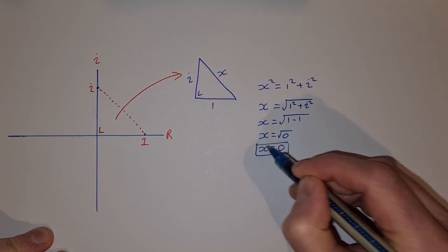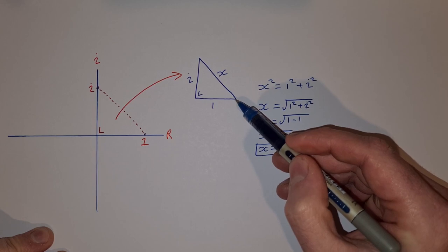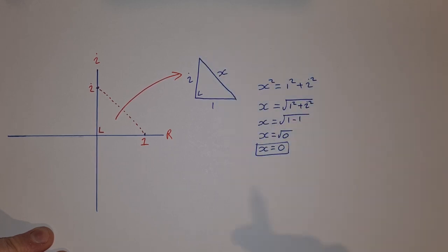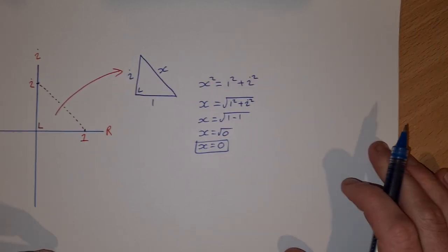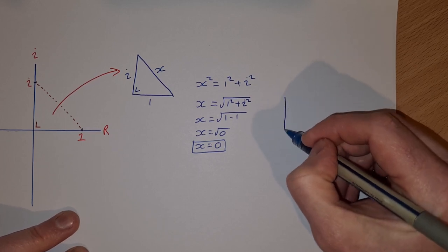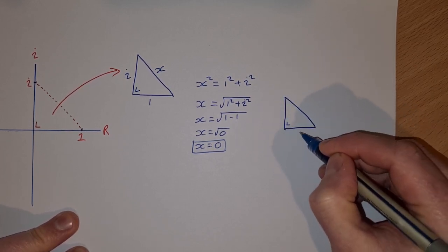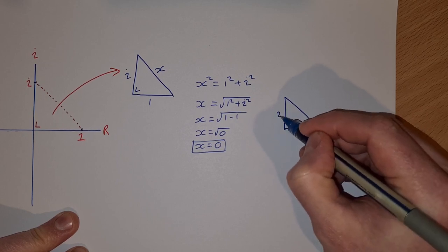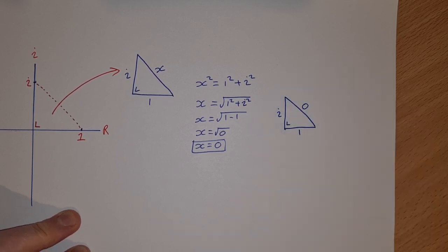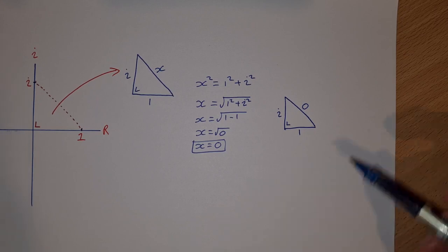So that means the distance or the length of this side is zero. So I have a right angle triangle with side one, side i, and side zero. Now clearly this doesn't work. We can't have a hypotenuse or a length of a side of a triangle with length zero.